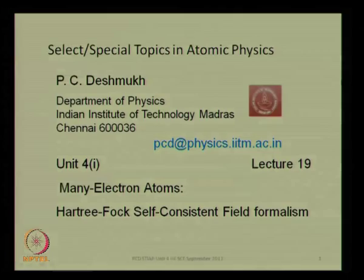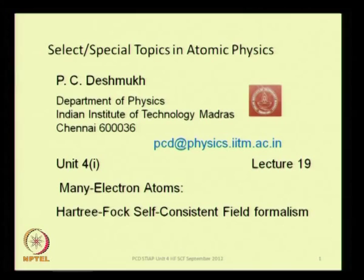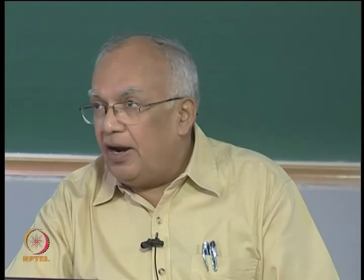Greetings, we will begin unit 4 today on many-electron systems. We did the hydrogen atom — the non-relativistic hydrogen atom first, then the relativistic hydrogen atom, and the Dirac formalism as well. We were very fortunate dealing with this, because the one-electron Coulomb problem has exact solutions, and we got exact solutions for the hydrogen atom both for the non-relativistic and the relativistic case.